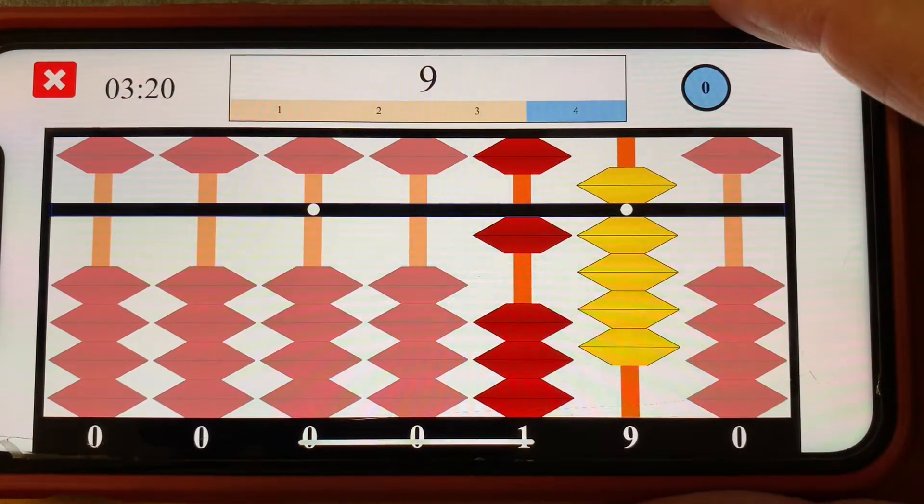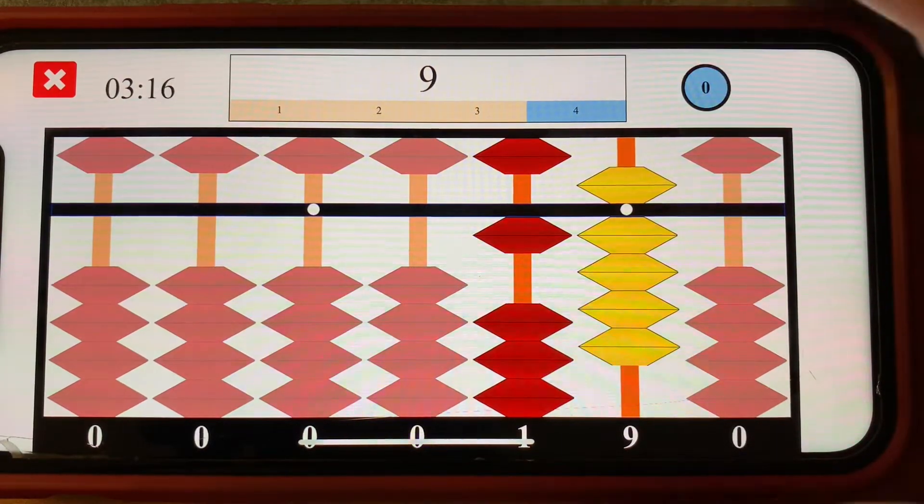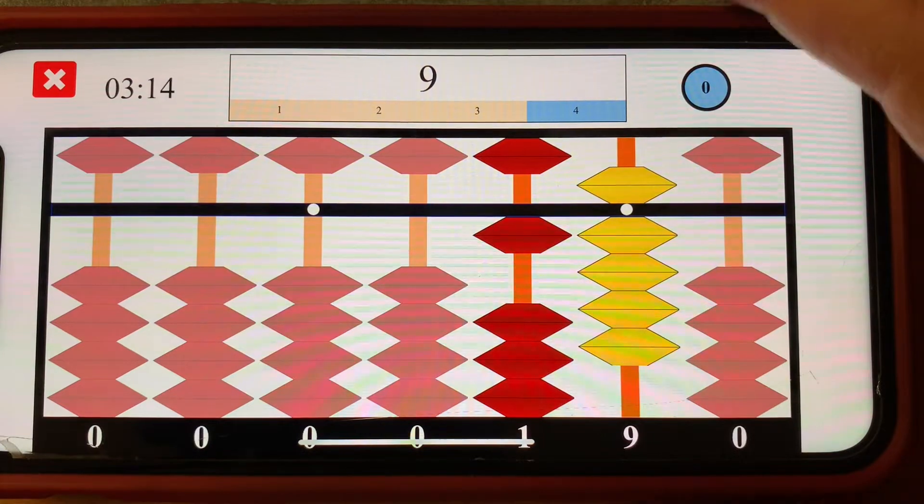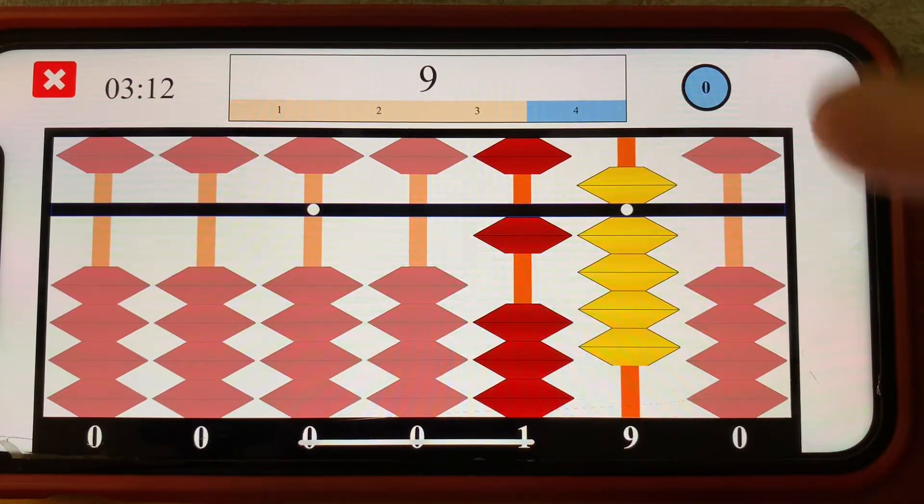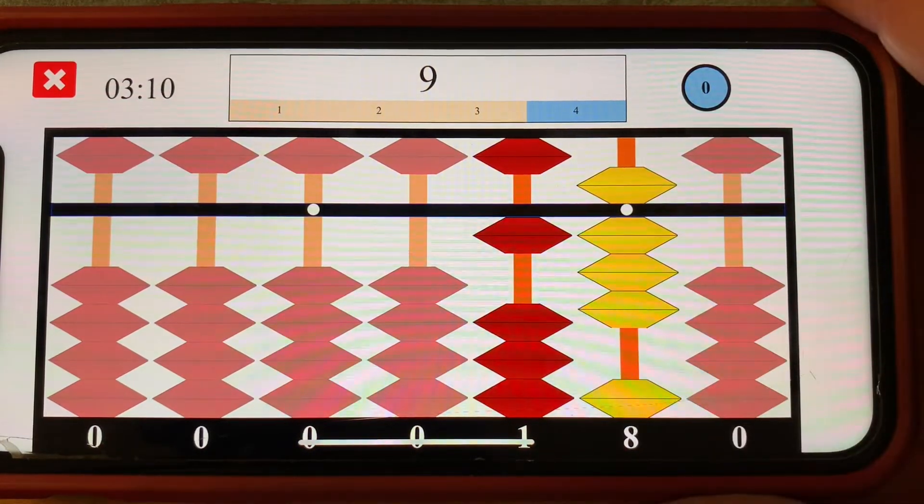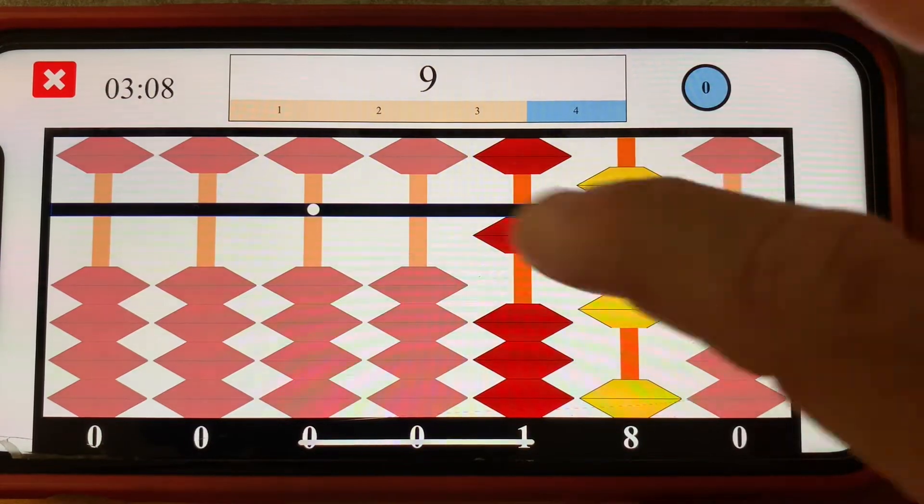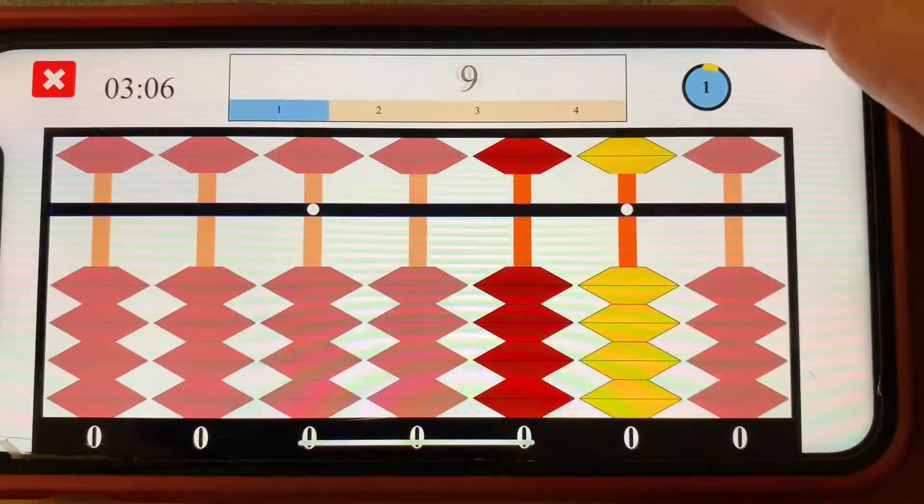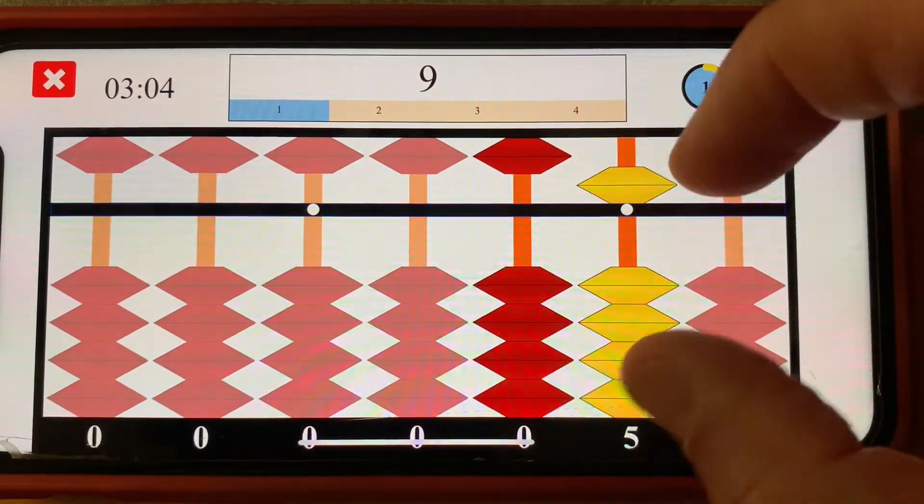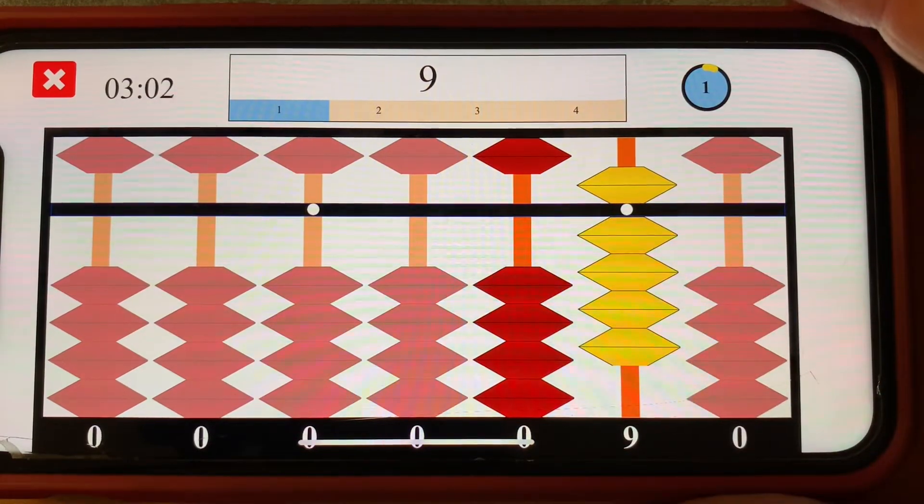The 10 pair addition rule says add 1 to the next rod left and then subtract 9's 10 pair. What's 9's 10 pair? 9's 10 pair is 1. So I subtract 1 for a final answer of 18.